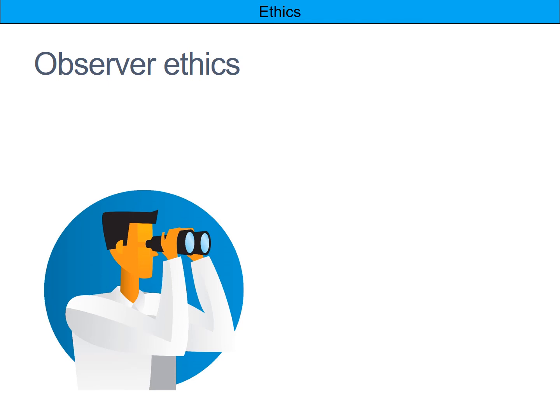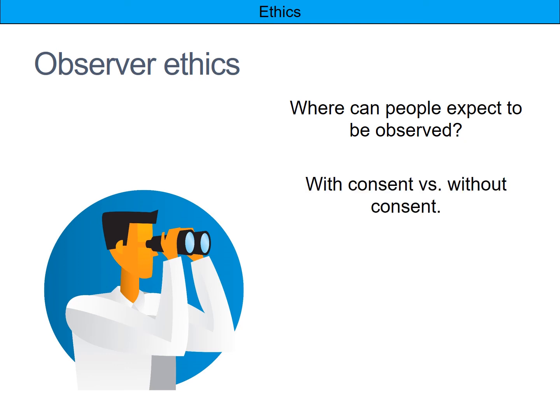Finally, observer ethics — this is only relevant to observations. The key question is: where can people expect to be observed? In the comfort of their own home, they probably don't expect to be observed, so you can't observe them there — that's not ethical. On a playground or out on the high street, that's absolutely fine. Observations with or without consent are possible, but without consent you need to be very careful — it's always best to get consent. Public spaces like playgrounds are acceptable; private spaces like bedrooms or front rooms are not.